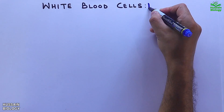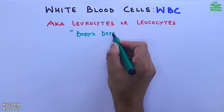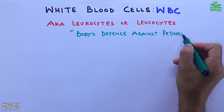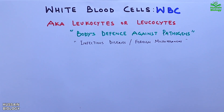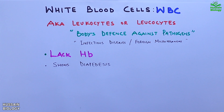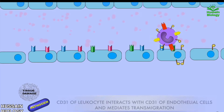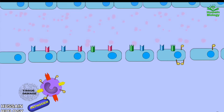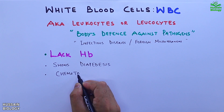White blood cells, also known as leukocytes, are involved in the body's defense against pathogens, which includes infectious diseases or foreign bodies. These cells show diapedesis, which is leukocyte extravasation. In this animation, we can see how a white blood cell comes out of the circulation towards the site of tissue damage.